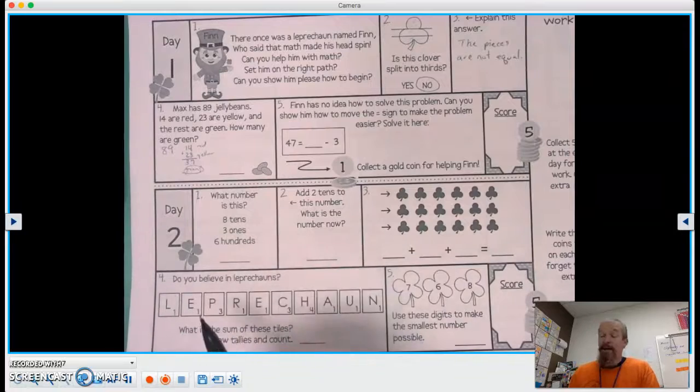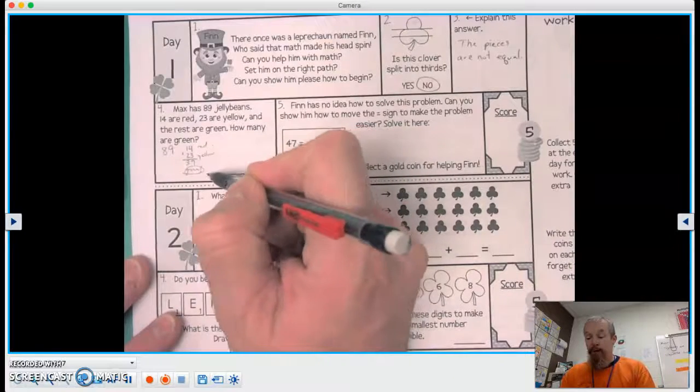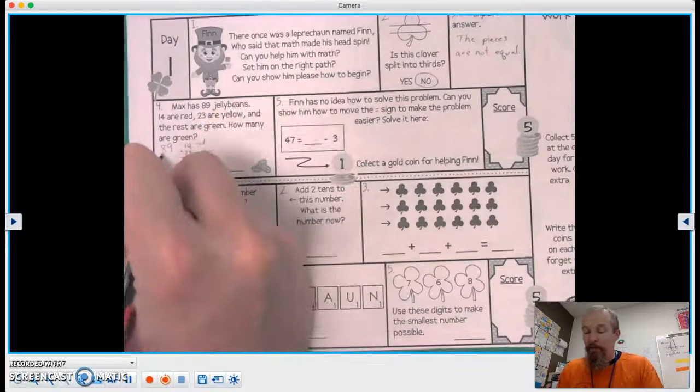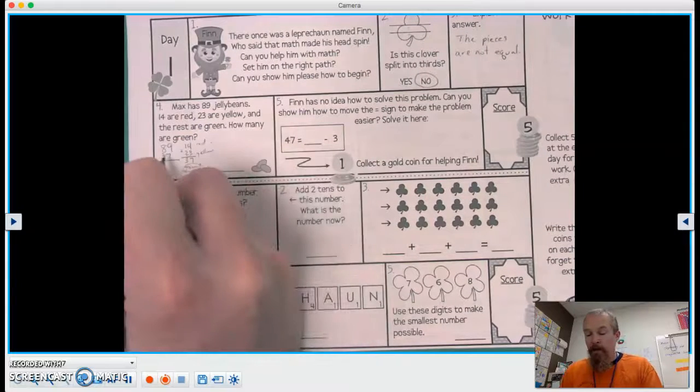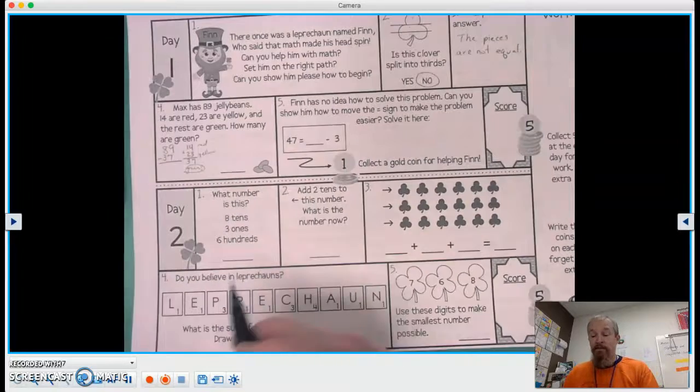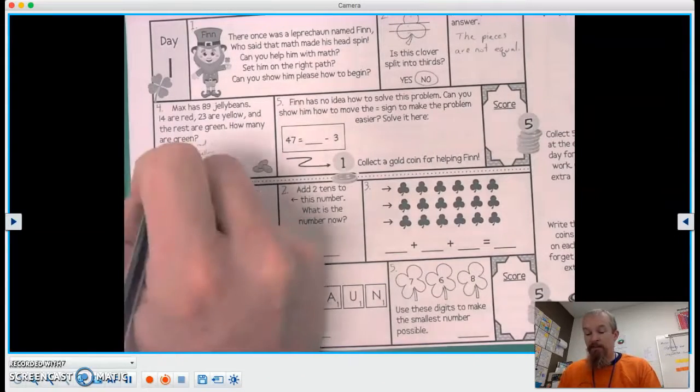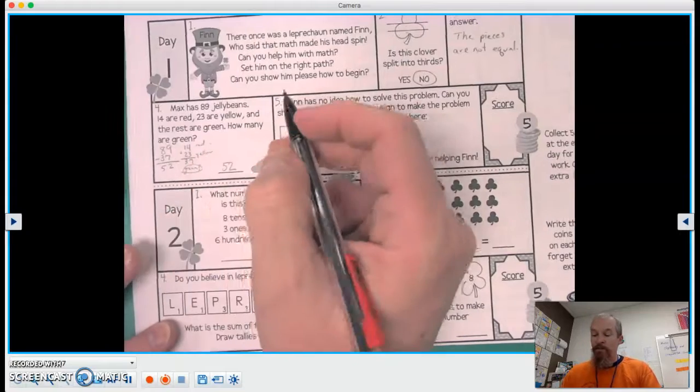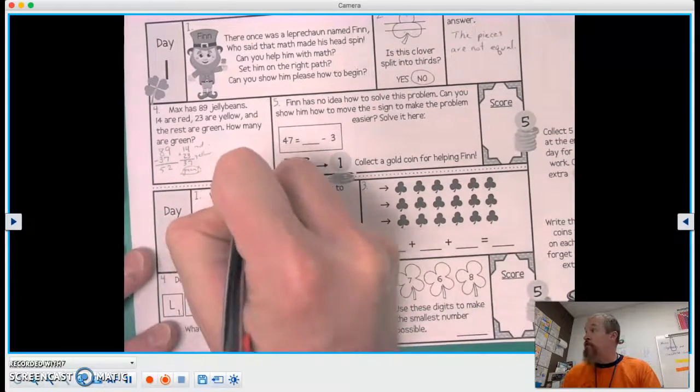So now we have a part, part, whole question. This is really kind of like a part, part, part whole. There are really three parts, right? So we're going to take that part away, the combination of red and yellow, and we're going to take that away from the total because the rest are green. Nine minus seven is two, and eight minus three is five. So there are 52 green jelly beans.